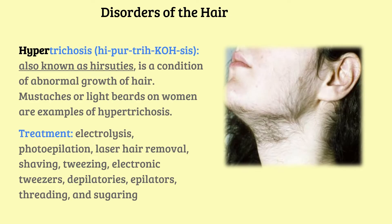Now we're going to talk about another disorder: hypertrichosis. Hypertrichosis is also known as hertis. It is a condition of abnormal growth of hair. Mustaches or light beards on women are examples of hypertrichosis. The treatment is electrolysis, laser, or any of those permanent hair removals.